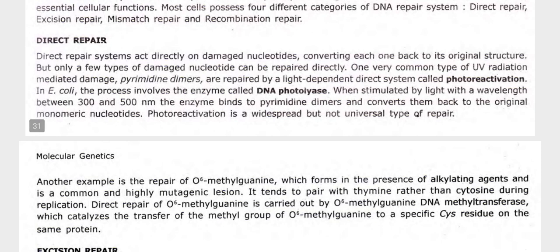First is direct repair. Direct repair systems act directly on damaged nucleotides, converting each one back into its original structure. Only a few types of damaged nucleotides can be repaired directly. One very common type is UV radiation-mediated damage: pyrimidine dimers, which are repaired by a light-dependent direct system called photoreactivation.